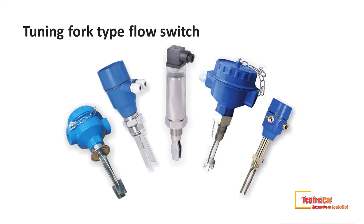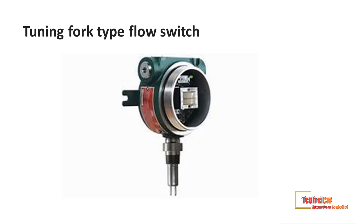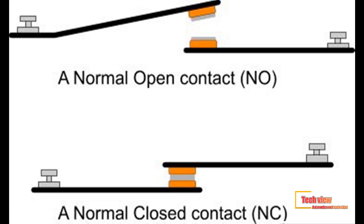The vibrating fork type flow switch uses a tuning fork shaped sensing element with two tines inserted into the bin or tank where the target media will be present. The tuning fork sensing element is placed into vibration at its natural resonant frequency by establishing motion in the sensing element or fork. The harmonic vibration of the tuning fork sensing element is established using piezoelectricity.